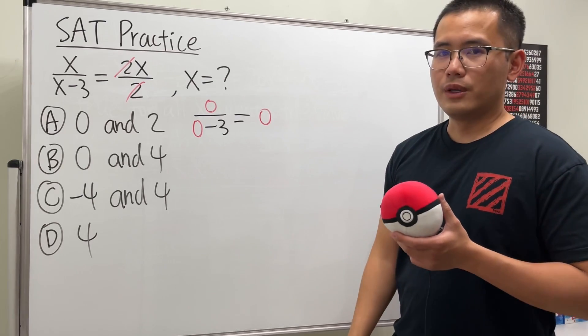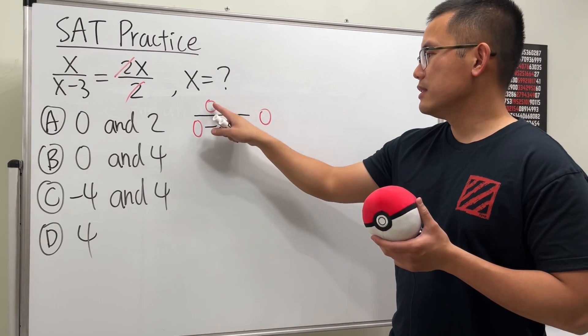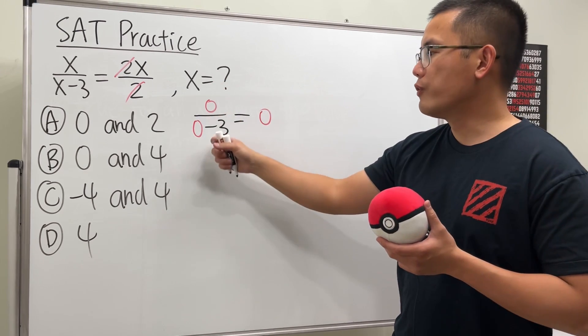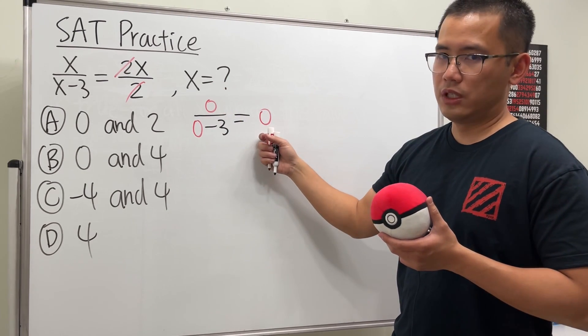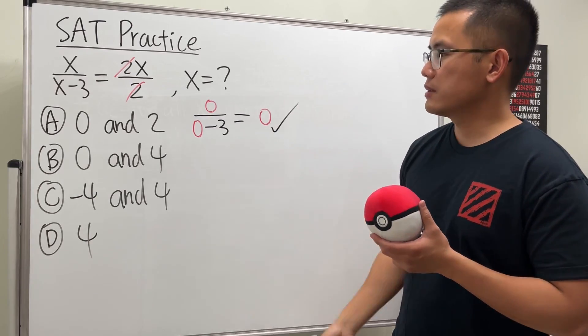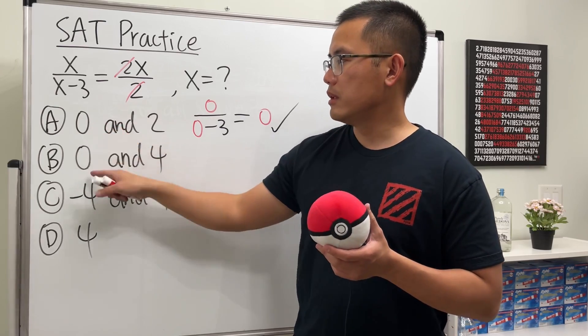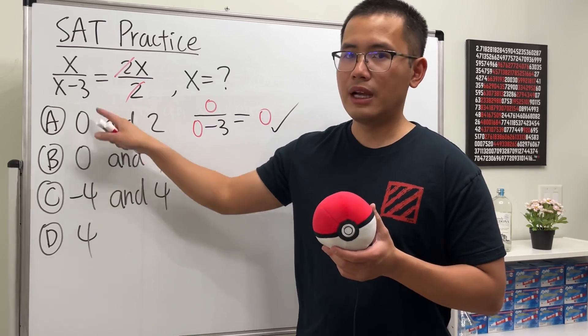Is this going to give us zero? Yes it is, because this is zero over negative three. When we have zero on the top of a fraction over a non-zero number, this will give us zero, so this right here checks. So now we know the answer must be either A or B because they were the only ones that have zero.